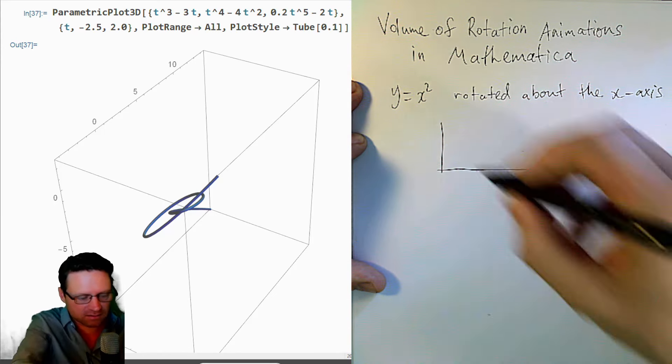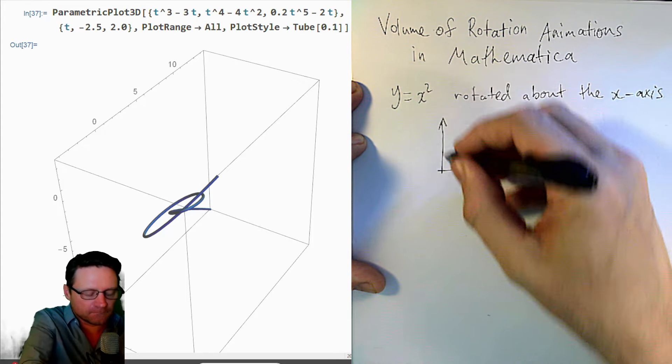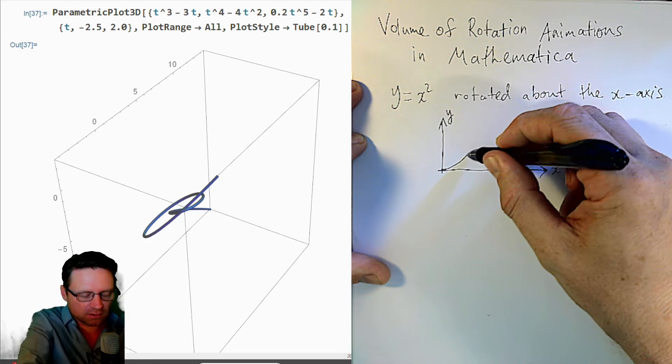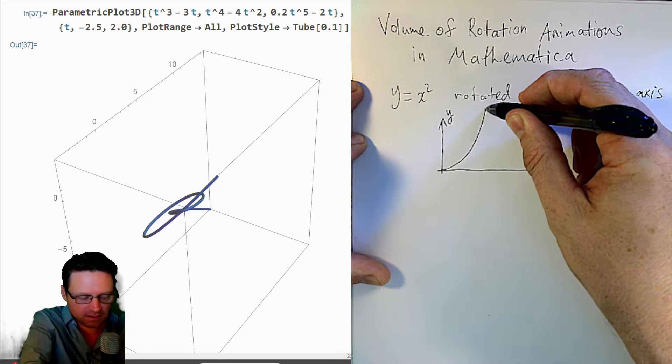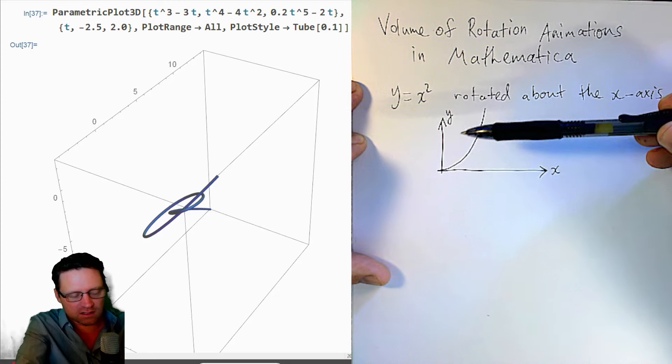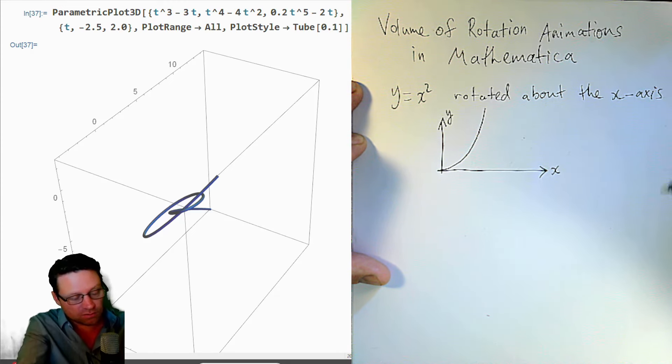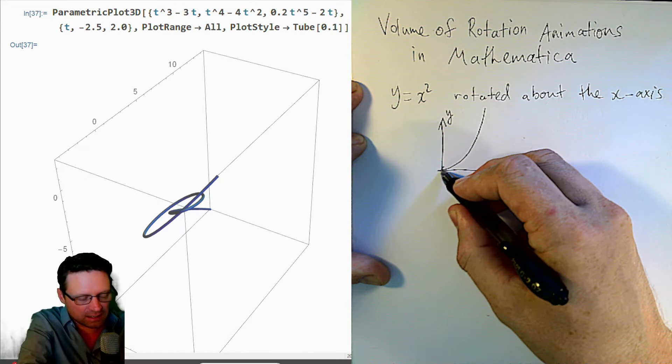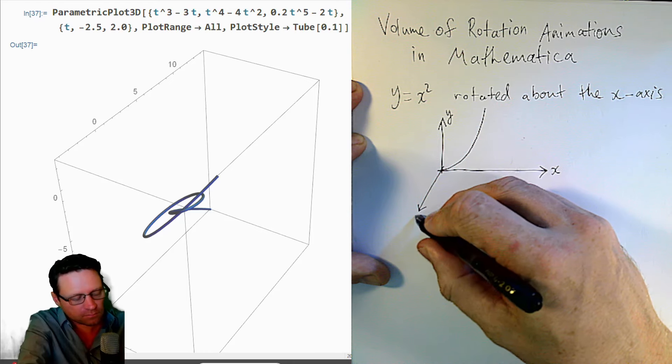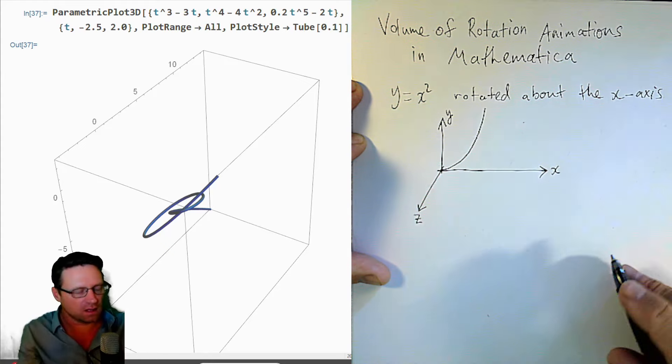So there's the x-axis. There's the y-axis. And then let's draw y equals x squared. It might look something like this. The idea is in volume of rotation, you want to spin this around the x-axis so that it forms a volume. But we want to plot this in 3D, so we need another axis. We'll spin this around.